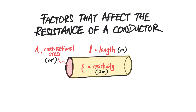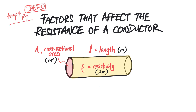In this video, we're going to talk about factors that will affect the resistance of a conductor. One factor is temperature — as temperature rises, particles vibrate more vigorously, so electrons have more collisions with them, hindering their movement, and resistance increases. For this video, we're going to assume that temperature remains constant.